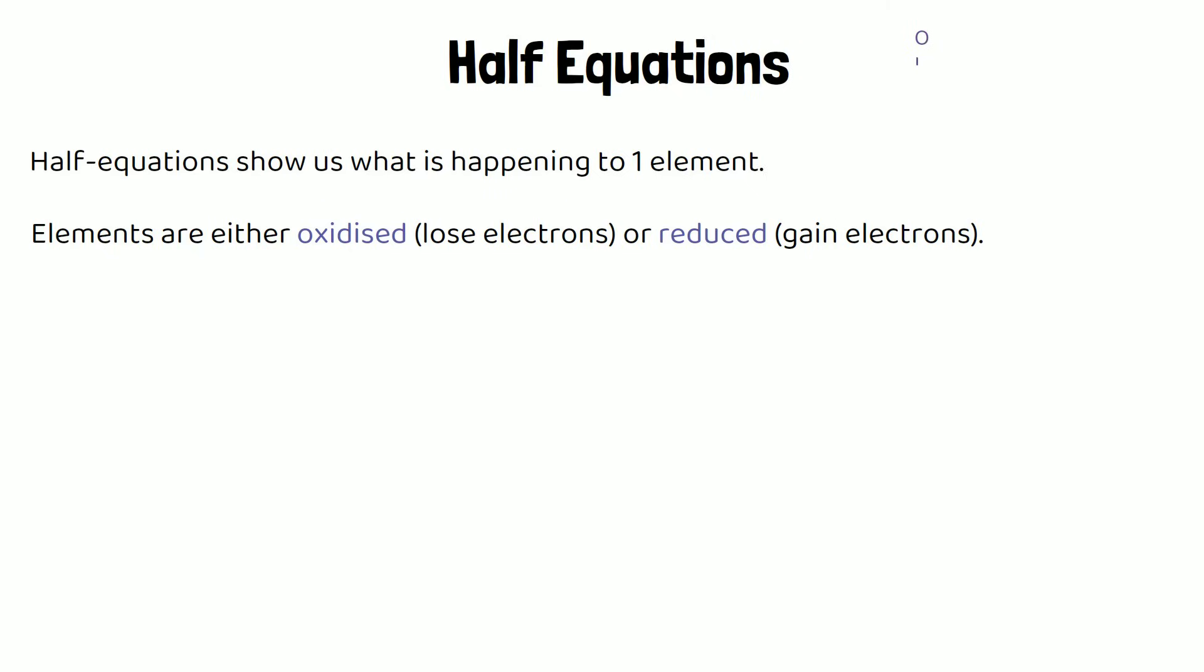So we need to remember what oxidation and reduction mean and we do that using the acronym OILRIG. This is to help you remember what oxidation and reduction are. It stands for oxidation is loss of electrons, reduction is gain of electrons. This is different to the oxidation and reduction in terms of oxygen. This is just looking at in terms of electrons.